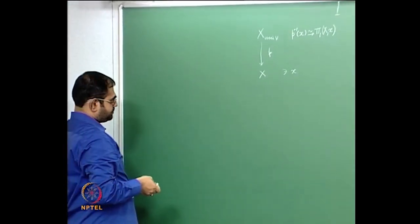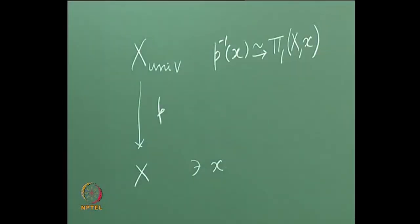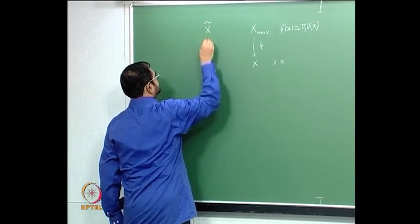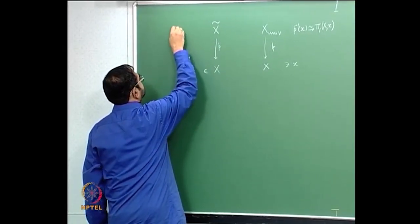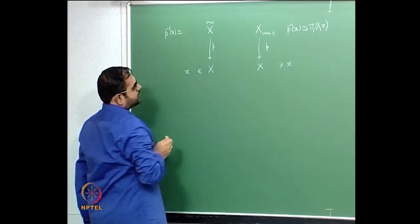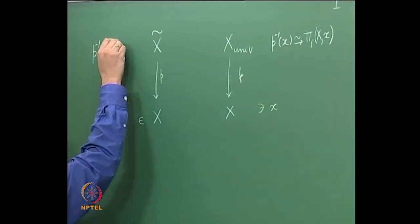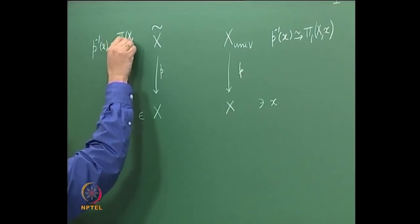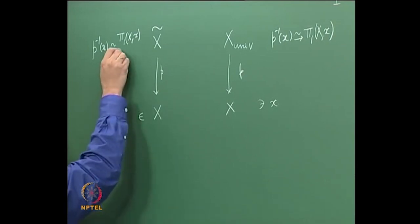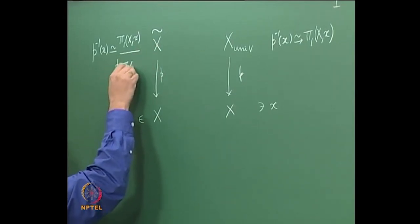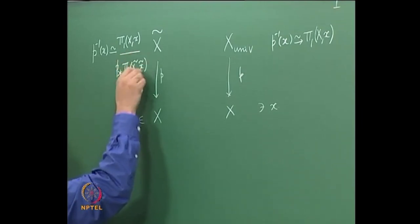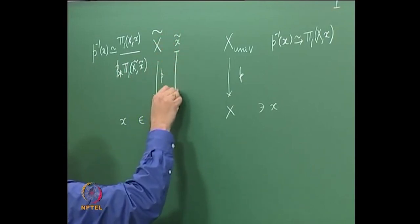In fact we had a statement for a general covering from which this followed. Namely, if you had a general covering map p: X̃ → X, then for a point x in X, the fiber p⁻¹(x) can be canonically identified with the coset space — the fundamental group of the space below based at the point below, mod the image of the fundamental group above — where x̃ was a point that mapped to x.